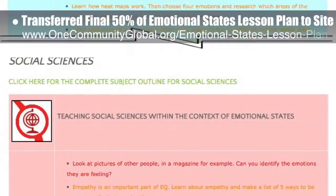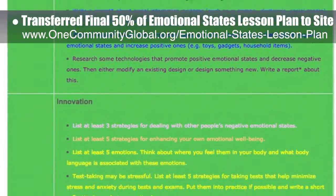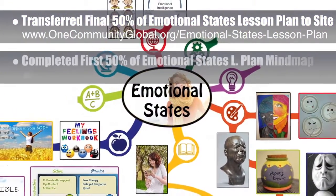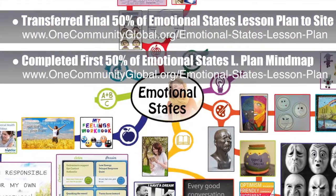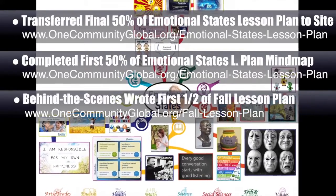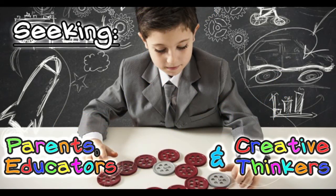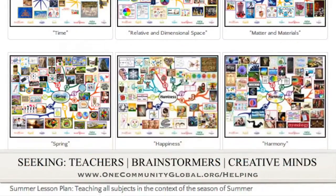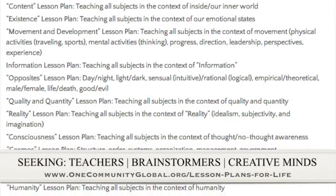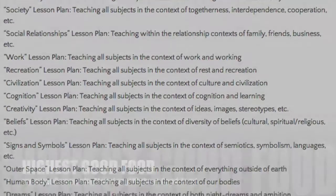The team transferred the final 50% of the written content for the emotional states lesson plan to the website. This lesson plan teaches all subjects to all learning levels in any learning environment using the central theme of emotional states. We also completed and added the first 50% of the mind map for that lesson plan to the webpage, and wrote the first half of the fall lesson plan, bringing it to 100% complete behind the scenes. We are seeking people to help finish these lesson plans.